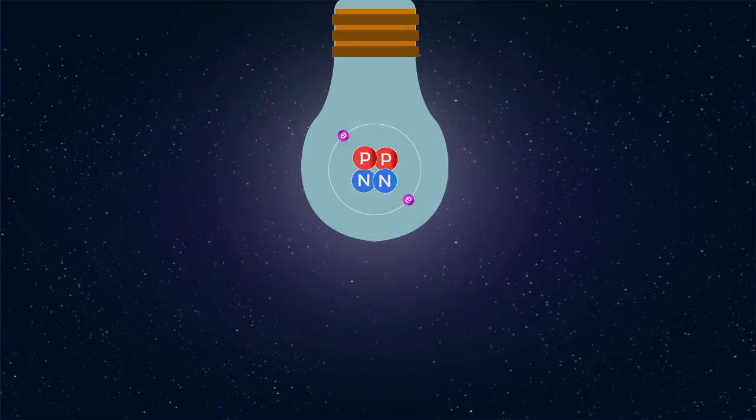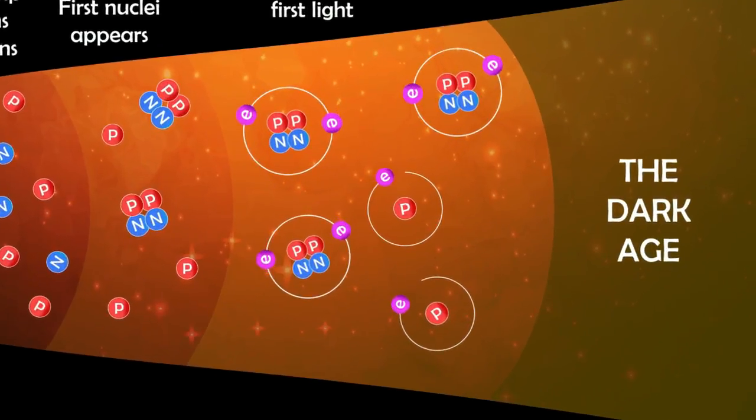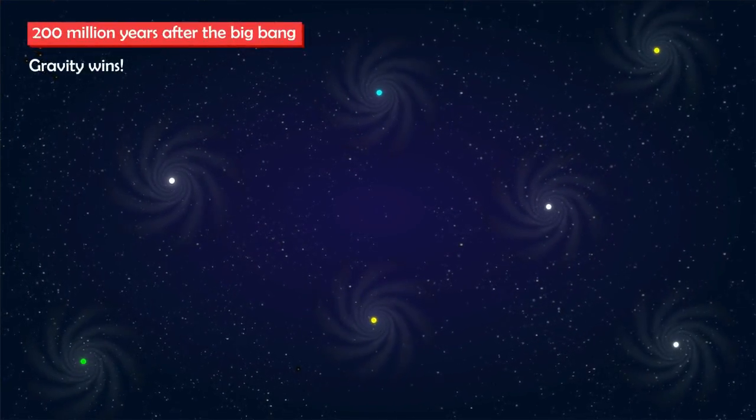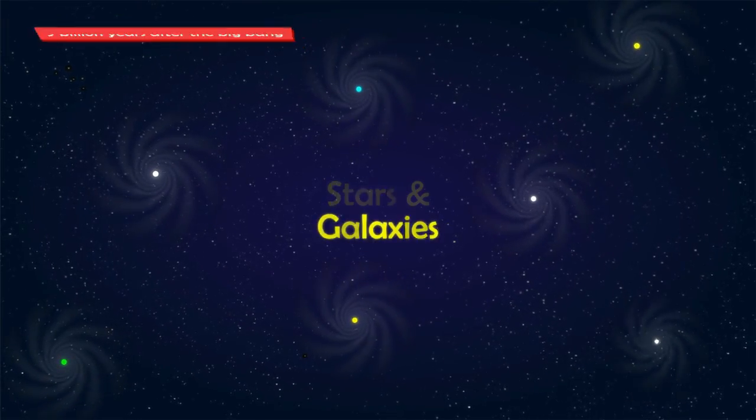For several hundred million years, about 200 million years after the Big Bang, the universe began to come out of its cosmic dark age. Small dense regions of cosmic gas start to collapse under their own gravity to form the very first stars and galaxies, which light up the whole universe.